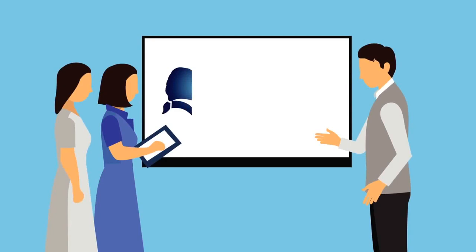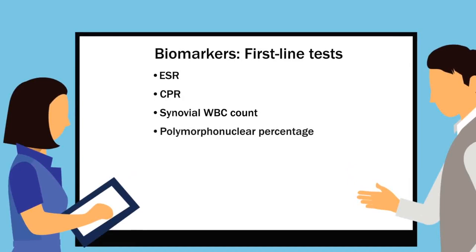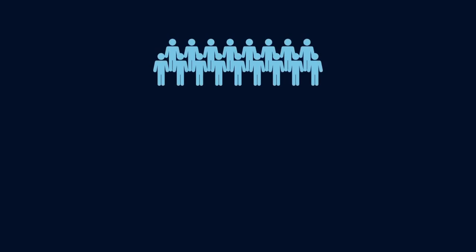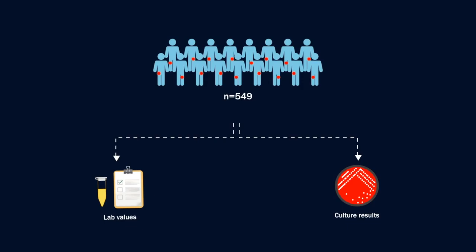A group of researchers from Thomas Jefferson University performed a study to determine how inflammatory biomarkers differed between certain groups of organisms. The team reviewed 653 cases of hip or knee total joint arthroplasty revision and examined lab values and culture results of 549 cases of periprosthetic joint infections.